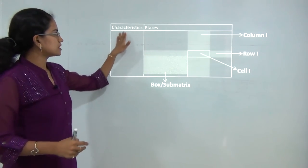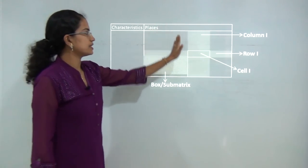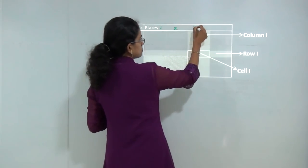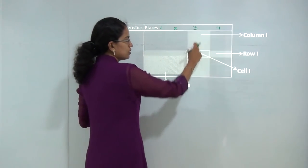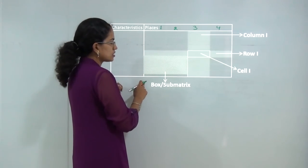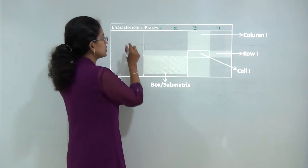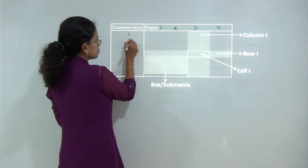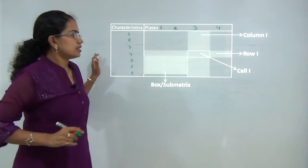Under spatial analysis, here is a diagram to explain the concept. There are certain characteristics and various places arranged as columns: place 1, place 2, place 3 and place 4. The vertical ones are the columns and the horizontal ones are the rows, representing characteristics 1, 2, 3, 4, 5, 6 and so on.